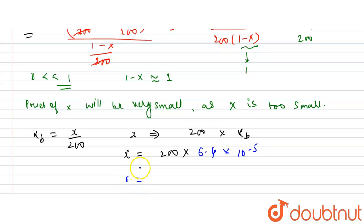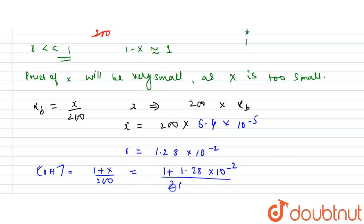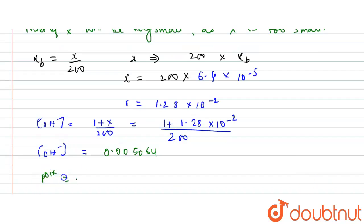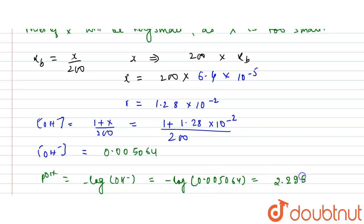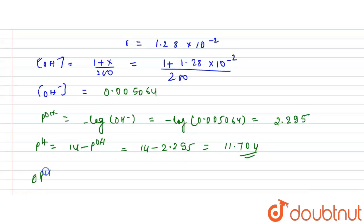Now [OH⁻] = (1 + x)/200 = (1 + 1.28 × 10⁻²)/200 = 0.005064. Then pOH = −log(0.005064) ≈ 2.295. Therefore, the final pH = 14 − pOH = 14 − 2.295 = 11.704.